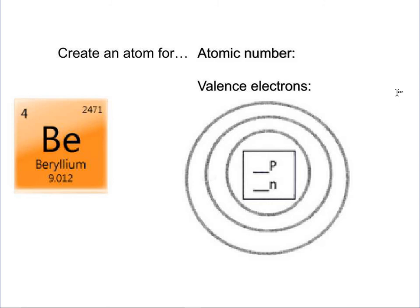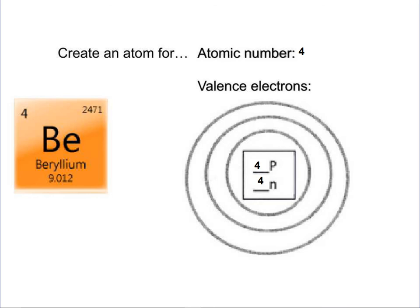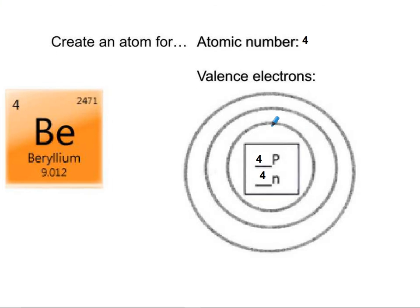We're creating an atom for beryllium. Beryllium's atomic number is four, so it has four protons and four neutrons. You can only put two electrons in the first energy level, so I have two electrons here, then jump to the next one and put two more for a total of four. If you count just the electrons on the outside, that would be two valence electrons.